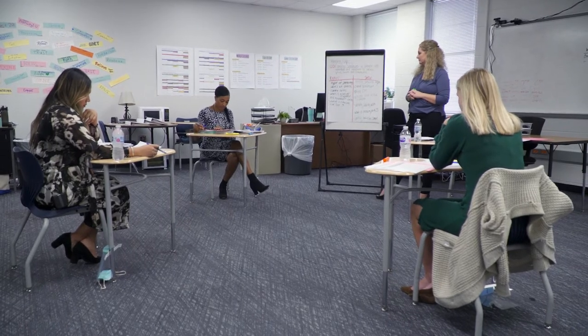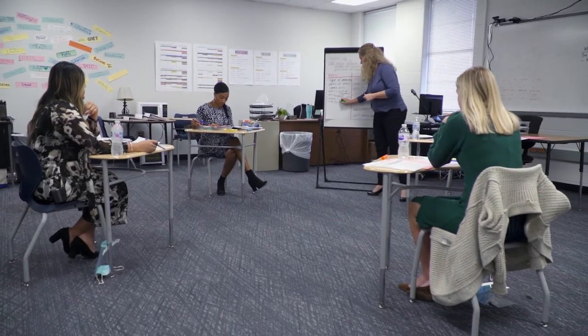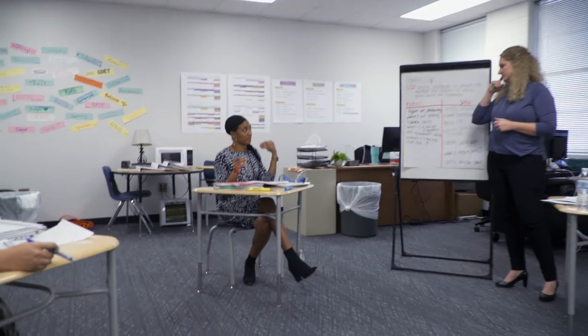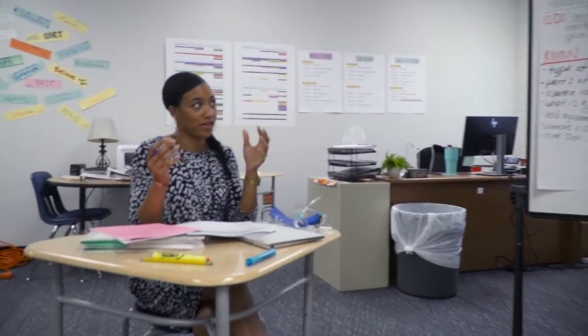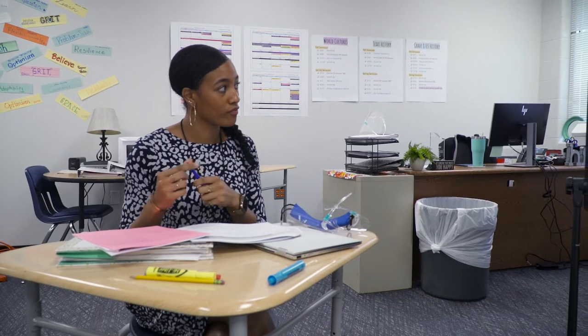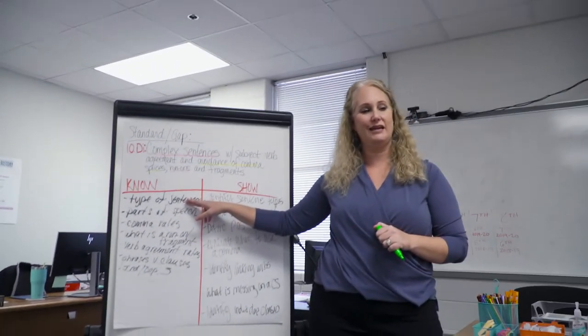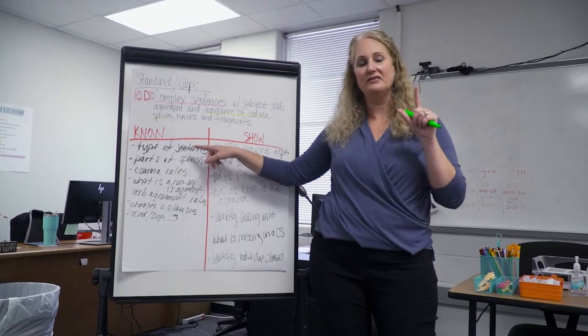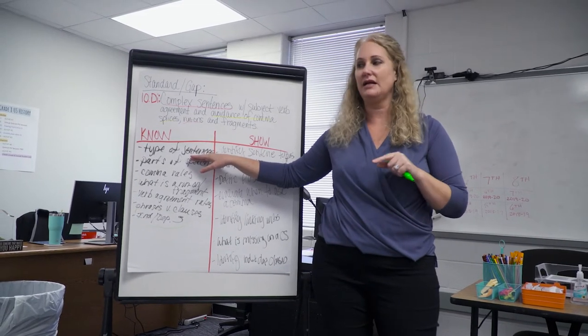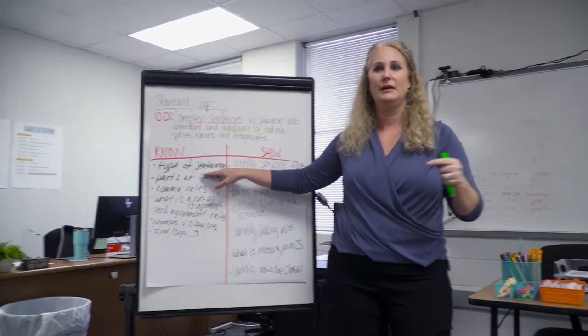Where we feel our students really need to close that gap to show mastery: independent and dependent clauses. Once they understand that, they will understand sentence types, they will understand what a run-on is, and they'll understand what a fragment is and how to use a comma. It starts there and everything else will fall into place. We could positively assume that in seventh grade they know types of sentences.